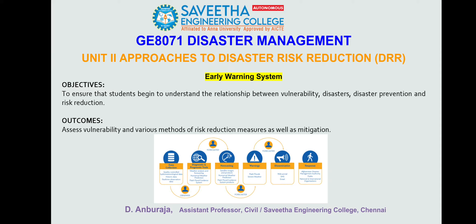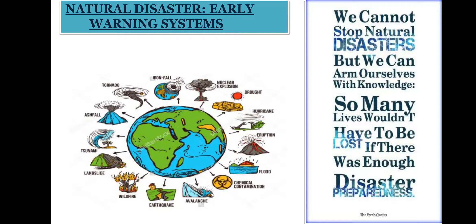Hello everyone. Now we are going to discuss about early warning systems. We need to approach disaster risk reduction. The subject name is disaster management. We cannot stop natural disasters, but we can arm ourselves with knowledge. So many lives would not have to be lost if there was enough disaster preparedness.